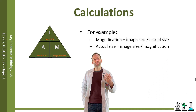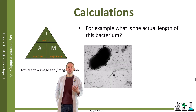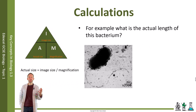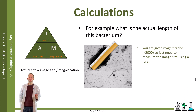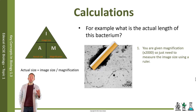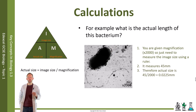For example, if you are asked: what is the actual size of this bacterium? We are given the magnification, which is x2000, so we just need to measure the image size using a ruler. You measure the length of that bacterium — it measures 45 millimeters. The actual size is therefore 45 over 2000, which gives you 0.0225 millimeters.